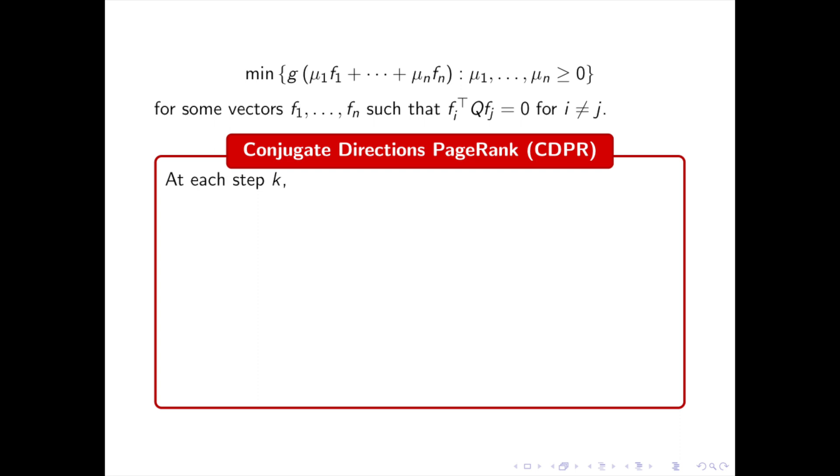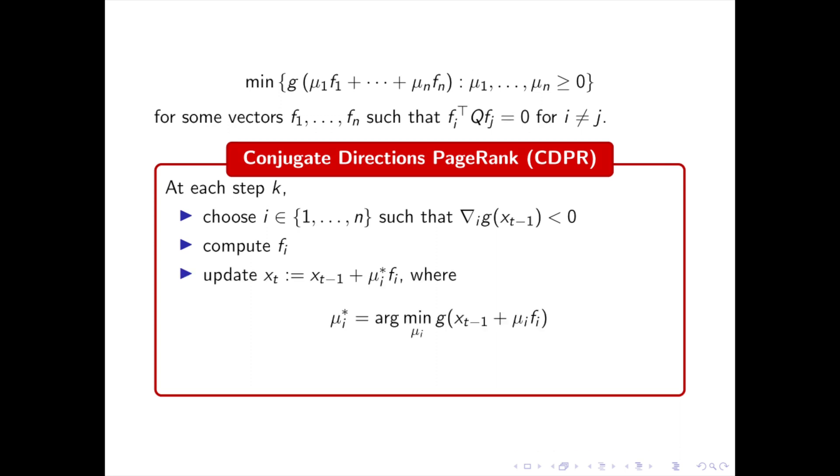We define algorithm CDPR as follows. We start from x_0 equals 0. At every step k, we choose i such that the i-th entry of the gradient of G is negative. Then we compute f_i, we optimize with respect to μ_i, and we update x_t. When there is no more such i, we have reached the minimizer x*. Now to prove that this algorithm works, we need to show that it only optimizes the μ_i such that μ_i* is not 0, and besides that it does not optimize the same μ_i twice. Let's see why.